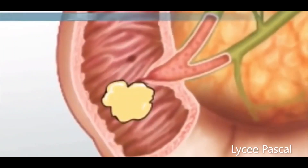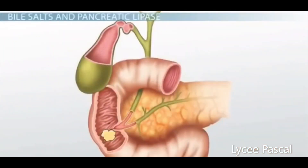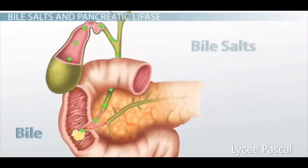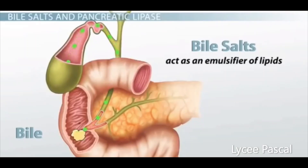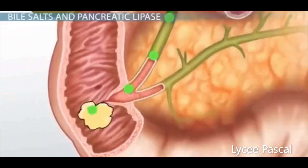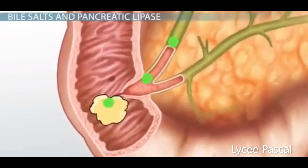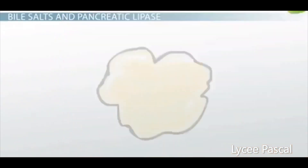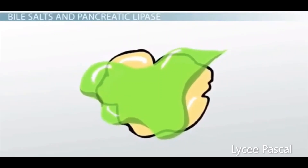By the time fat reaches the small intestine, it has not been digested at all — these clumps remain until bile, produced in the liver and stored in the gallbladder, mixes with the large fat droplets. Bile contains bile salts which act as an emulsifier of lipids. The term emulsify means to break large fat droplets into smaller droplets, which is exactly what we see in the small intestine.